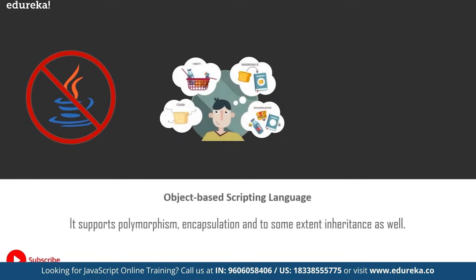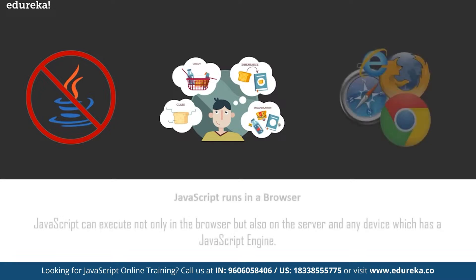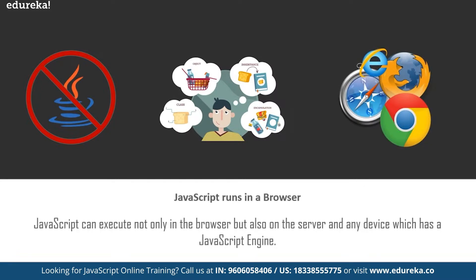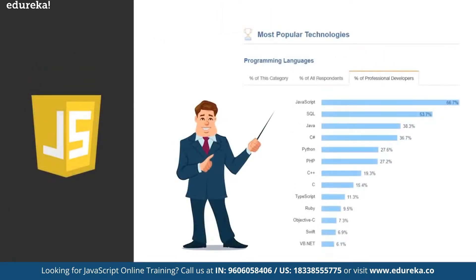JavaScript is an object-based scripting language which supports polymorphism, encapsulation, and to some extent inheritance as well. It doesn't have to be compiled like Java and C which require a compiler. Finally, JavaScript runs in a browser — you can run it on Google Chrome, Internet Explorer, Safari, etc. JavaScript can also execute on the server and any device which has a JavaScript engine. Among hundreds of programming languages, JavaScript is definitely one of the powerful ones that bring about big changes, and according to Stack Overflow, for the sixth year in a row JavaScript has remained the most popular and commonly used programming language.